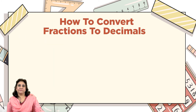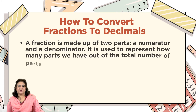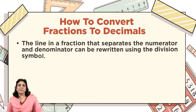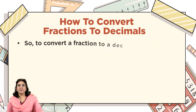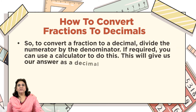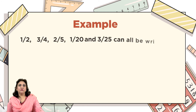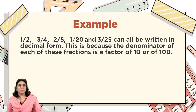How to convert fractions to decimals. A fraction is made up of two parts: a numerator and a denominator. It is used to represent how many parts we have out of the total number of parts. The line in a fraction that separates the numerator and denominator can be rewritten using the division symbol. So to convert a fraction to a decimal, divide the numerator by the denominator. If required, you can use a calculator.